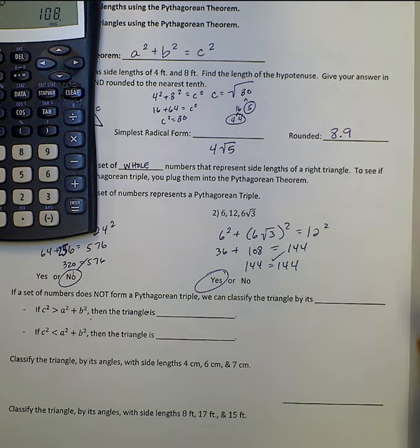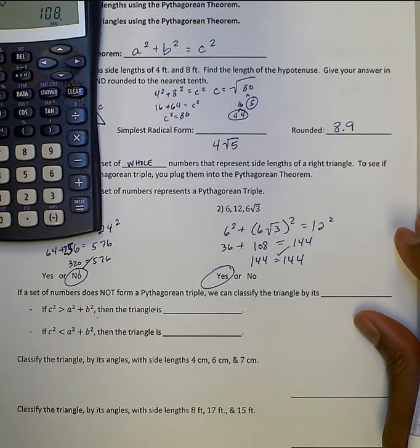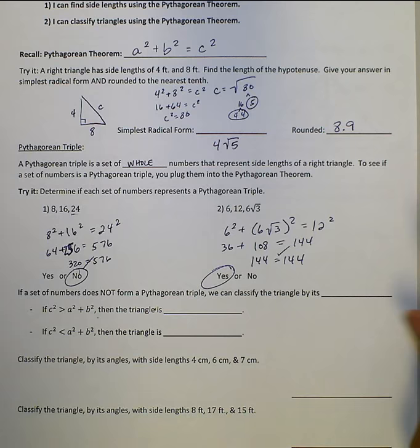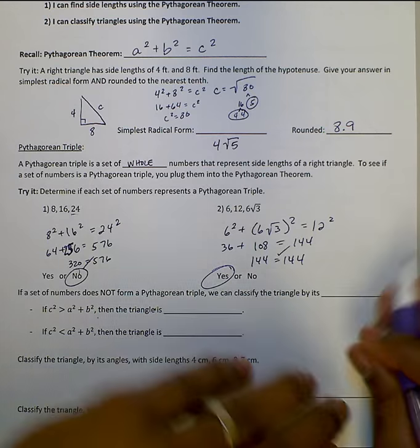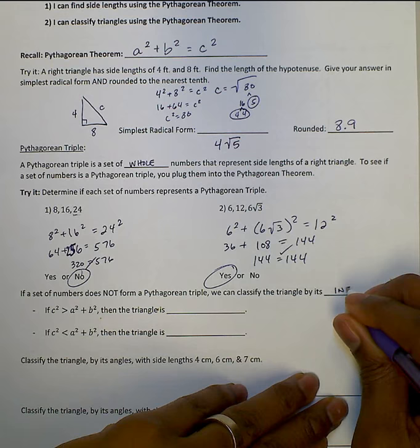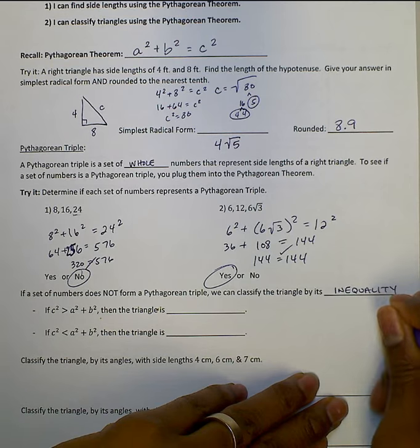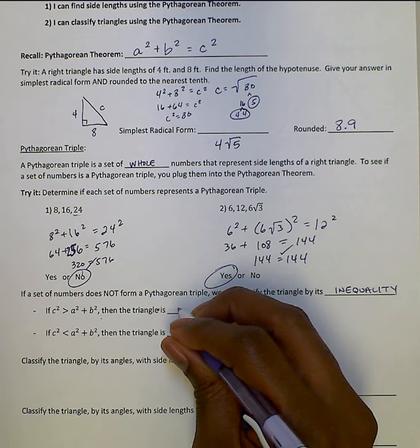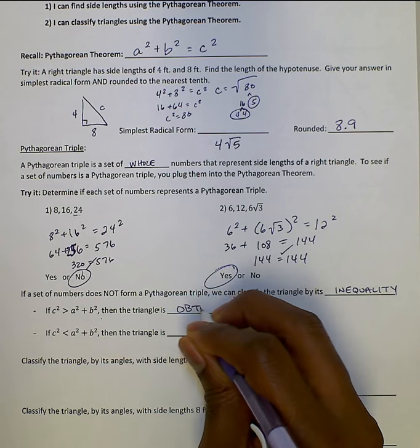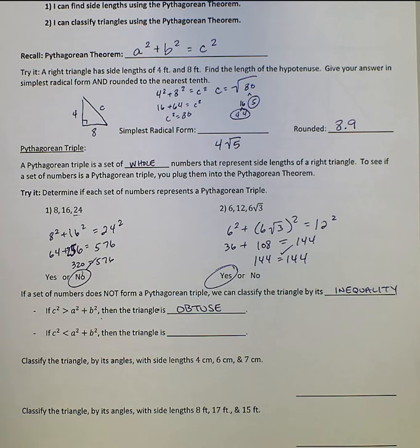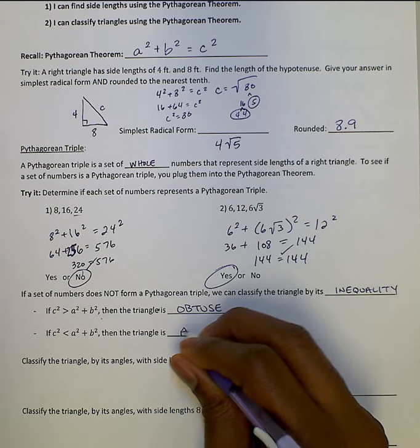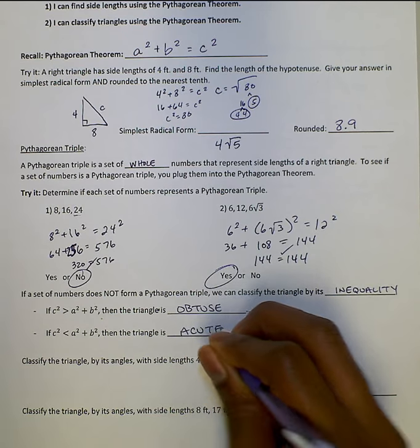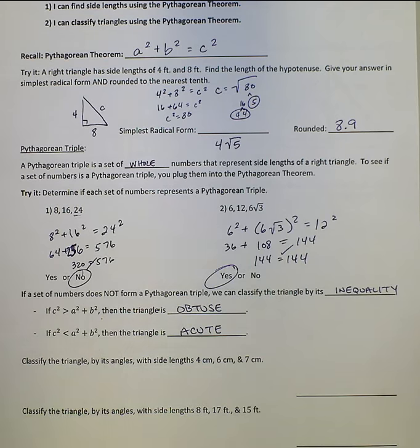If a set of numbers does not form a Pythagorean triple, we can classify the triangle by its inequality. If C squared is greater than A squared plus B squared, then we know that the triangle is obtuse. If C squared is less than A squared plus B squared, then we know that it is acute. You can think of it as if the hypotenuse is really big, it's an obtuse triangle. If the hypotenuse is too small, it's acute.